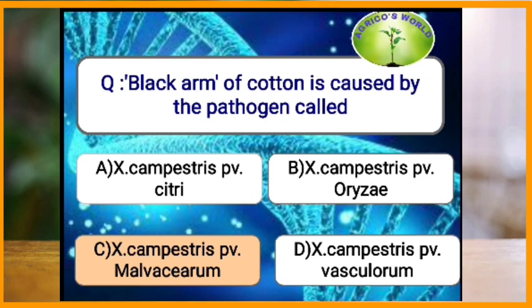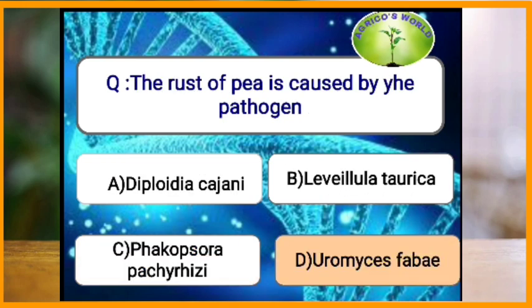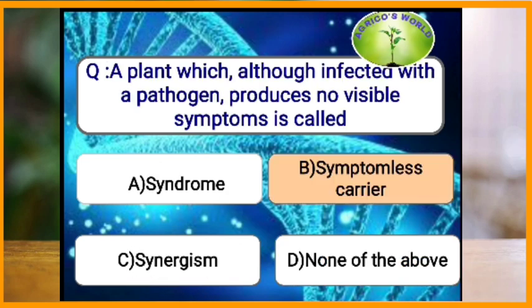Black arm of cotton is caused by the bacteria Xanthomonas campestris pv. malvacearum. The rust of pea is caused by the pathogen Uromyces fabae. A plant which, although infected with a pathogen, produces no visible symptom is known as a symptomless carrier.